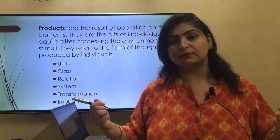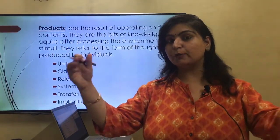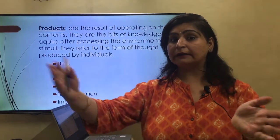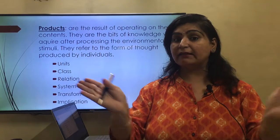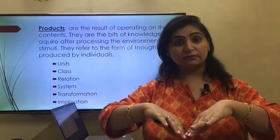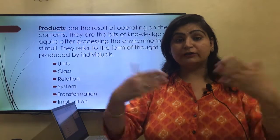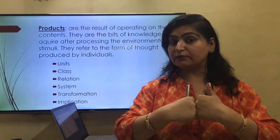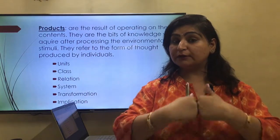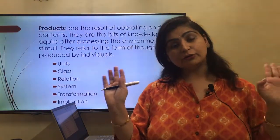Then comes system. System is multiple relations interrelated to form a structure or network. When there is lots of information, you know how to structure it, how to make a hierarchy, how to prioritize tasks, how things are related — like our ecosystem or a school as a system. When you understand that many objects and people are related to one another, influence one another, form a hierarchy and a structure, then we say we have understood the concept of a system.